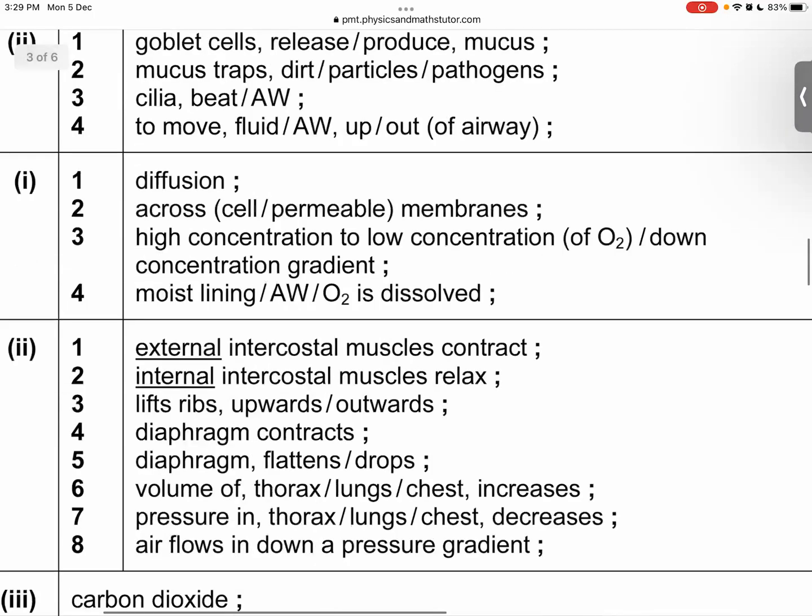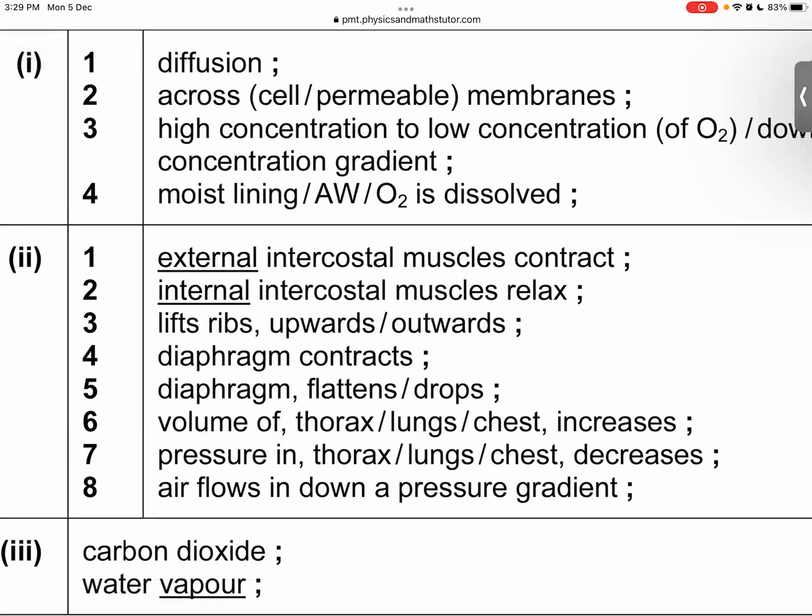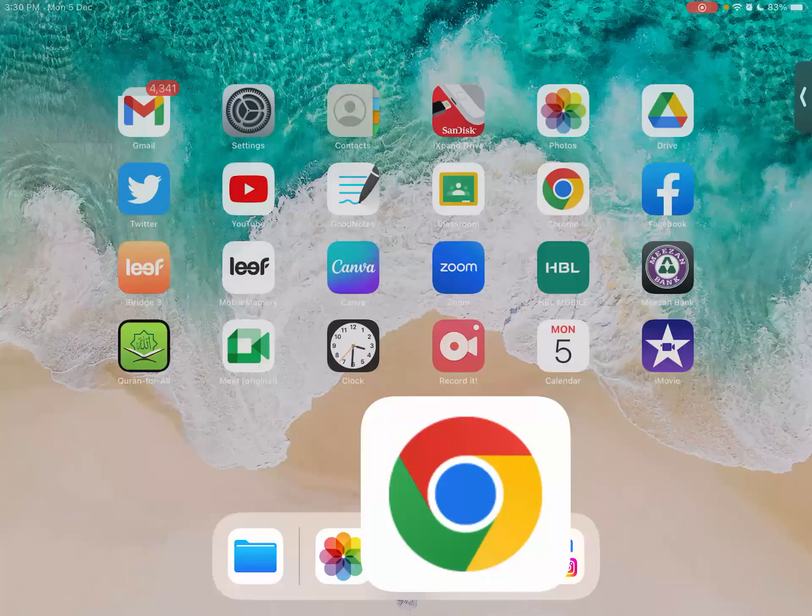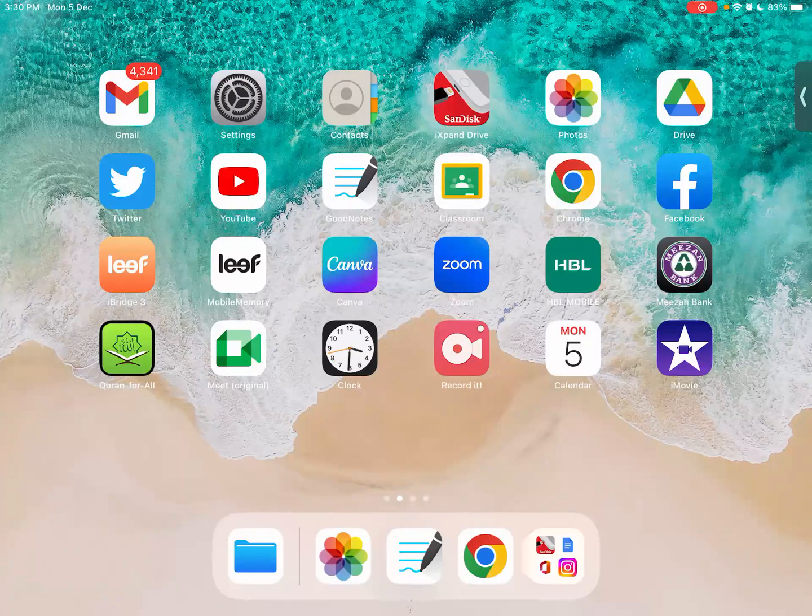Although I'm not doing this question with you, if you look at all these things, what would you say? Are these details of inhalation or exhalation? Inhalation. If you can remember all these, then you can remember exhalation. External contract. Internal relax. Ribs upward outward. Diaphragm contract flattened and going down. Volume of thoracic cavity increases. Pressure decreases. Air flows down a pressure gradient. Inhalation. By Wednesday just revise as much as you can as far as this chapter is concerned especially the aerobic and the anaerobic respiration part.